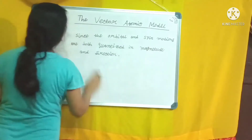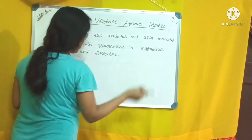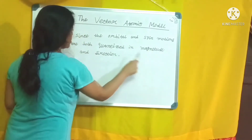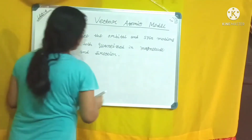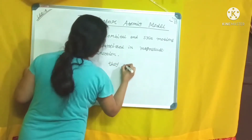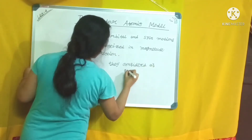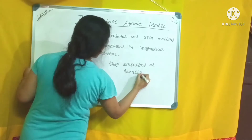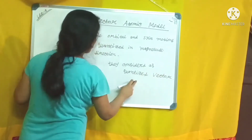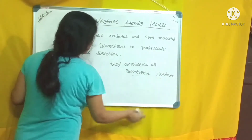Since both orbital and spin motion are quantized in magnitude and direction, orbital angular momentum and spin angular momentum are quantized vectors — they have a fixed magnitude and acquire only fixed directions. The atomic model we get depending on these quantized vectors is called the Vector Atomic Model.